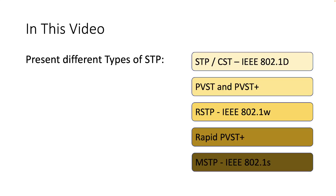That includes the original STP or Common Spanning Tree CST, the per-VLAN spanning tree which is PVST and PVST+, the Rapid Spanning Tree which is RSTP, then the Rapid per-VLAN spanning tree which is RPVST+, and finally MSTP which is the Multiple Spanning Tree Protocol.